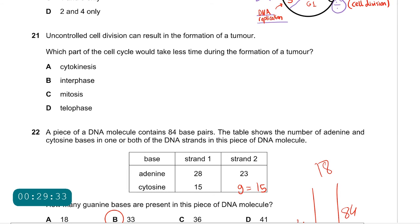Question 21: uncontrolled cell division can result in the formation of a tumor. Which part of the cell cycle takes less time during tumor formation? It is interphase, which takes less time.